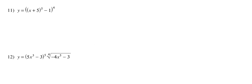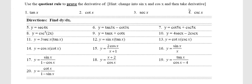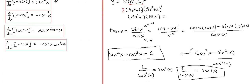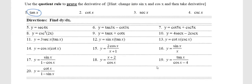Now let's practice trigonometric differentiation. We proved earlier that the derivative of tangent x equals secant squared x. You can also prove cotangent, secant, and cosecant using the basic definitions. For example, secant x equals 1 over cosine x. Let's find the derivative of secant of 4x.